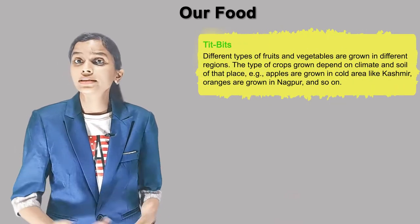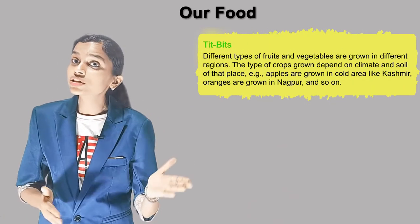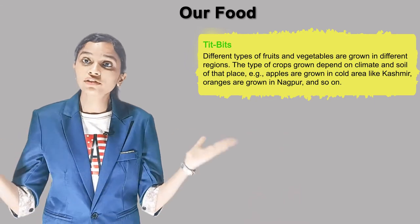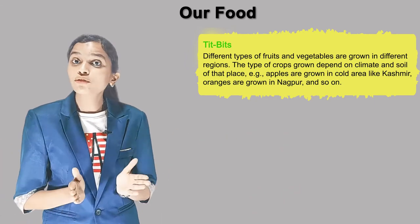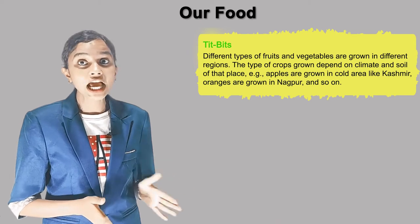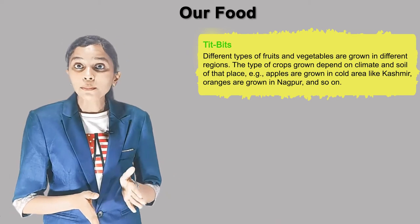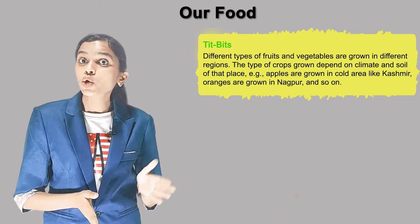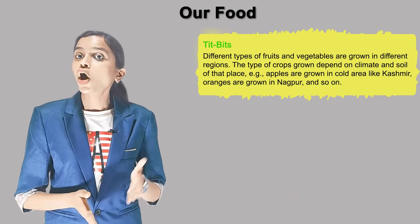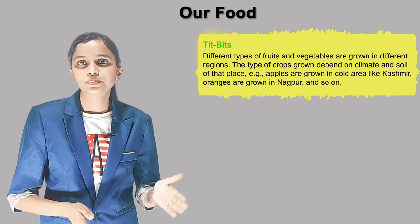Now it's time for tits and bits. Different types of fruits and vegetables are grown in different regions. The type of crops grown depends on the climate and soil of the place. For example, apples are grown in cold areas like Kashmir. Oranges are grown in Nagpur and so on.